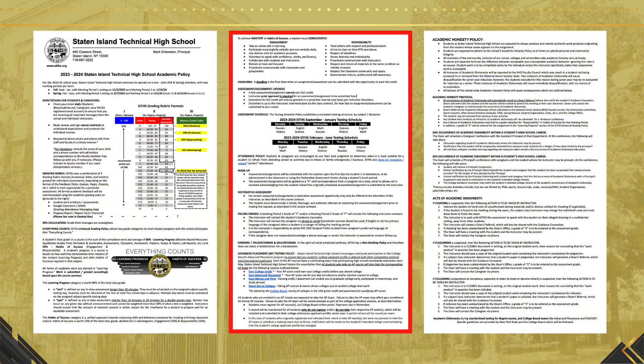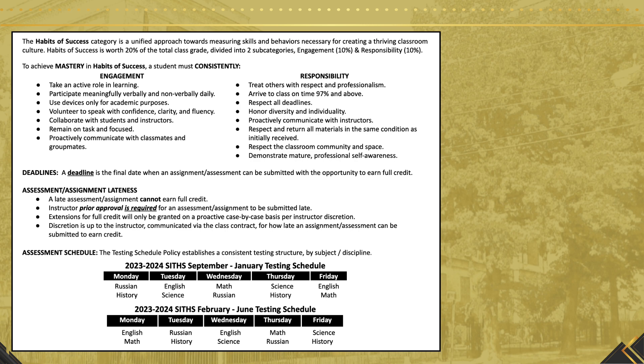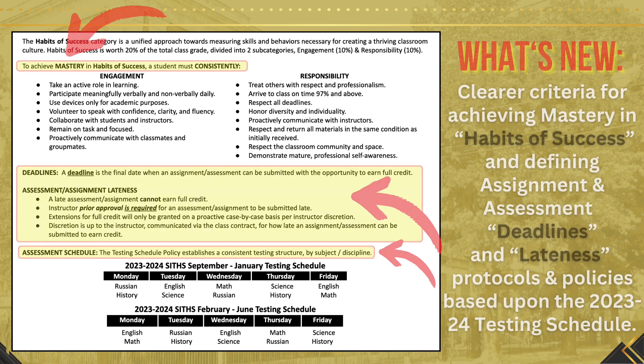Let's proceed to page 2 of the academic policy. We've made a clearer criteria for how to achieve mastery on habits of success, which encompasses 20% of a student's class grade, through sharing a set of behaviors under engagement and responsibility that need to be consistently demonstrated.